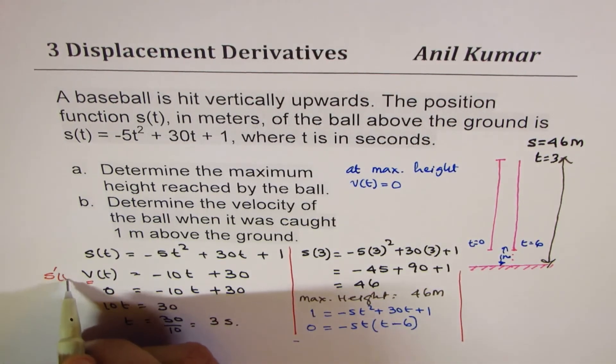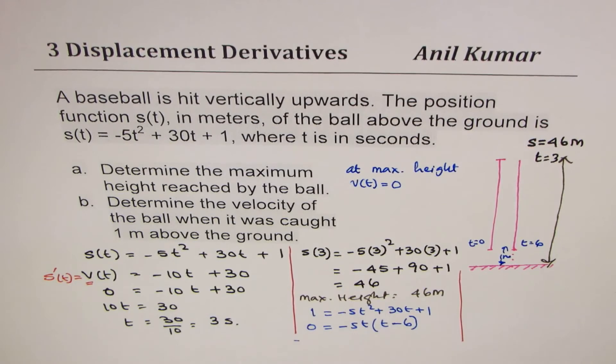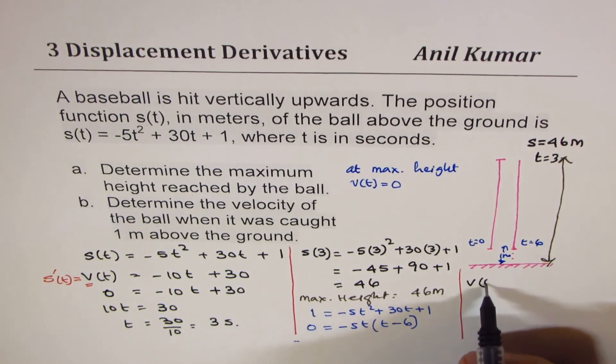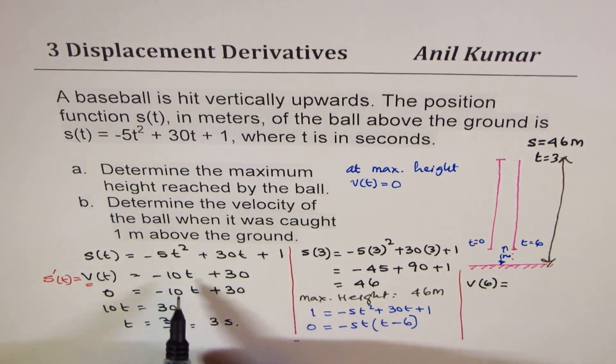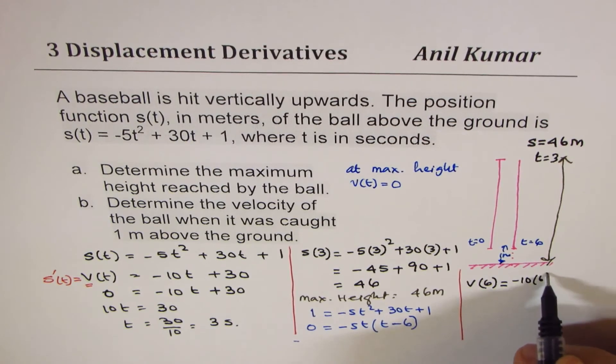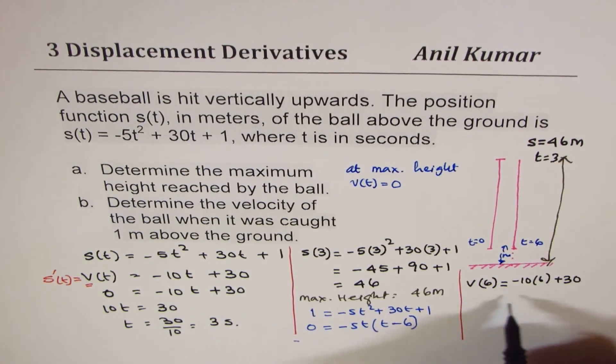Velocity is derivative of position. So velocity when t is 6 is equal to -10 times 6 plus 30, which is -30.